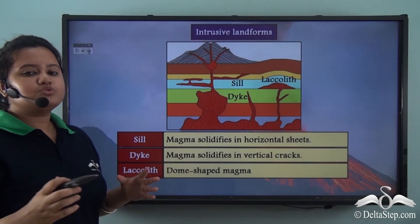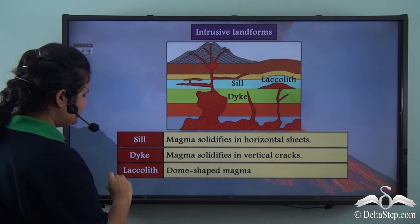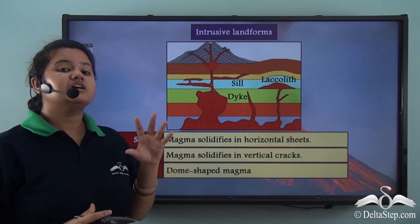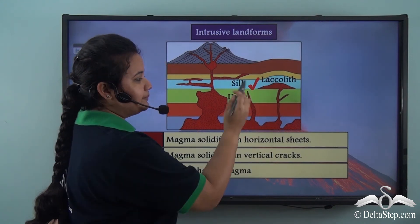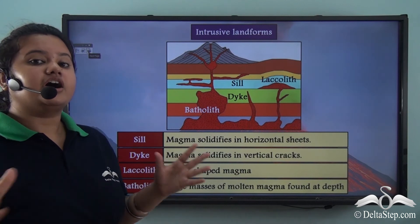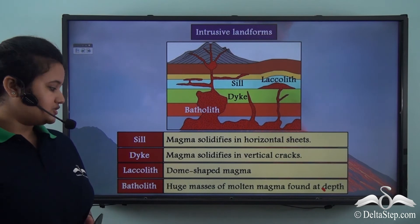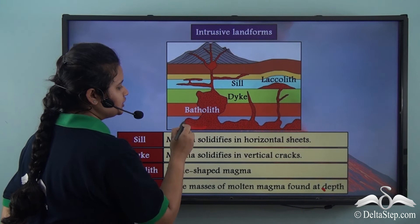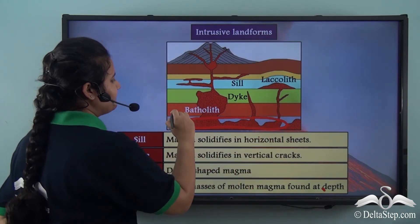A dome-shaped magma chamber present in the earth's interior is called a laccolith. Laccoliths extend over a small region. In this picture, this dome-shaped magma represents a laccolith. If a huge magma chamber is found at depth, then it is known as a batholith. In this picture, this huge mass of magma spread over a wide region is a batholith.